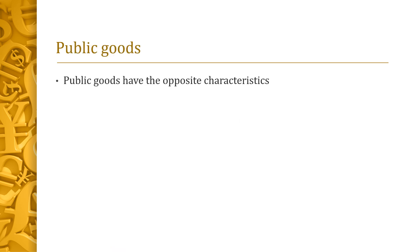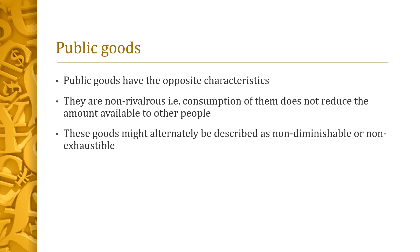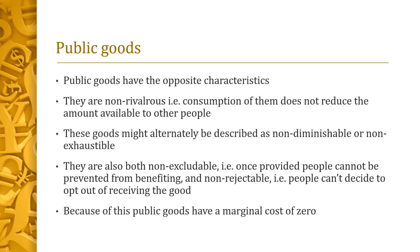Public goods have the opposite characteristics. They are non-rivalrous — consumption of them does not reduce the amount available to other people. These goods might alternately be described as non-diminishable or non-exhaustible, which both simply mean the same thing as non-rivalrous. They are also non-excludable. Once provided, people cannot be prevented from benefiting. They also have to be non-rejectable — that is, people can't decide to opt out of receiving the good. Because of this, public goods have a marginal cost of zero. There is no additional cost to providing them to one extra person.